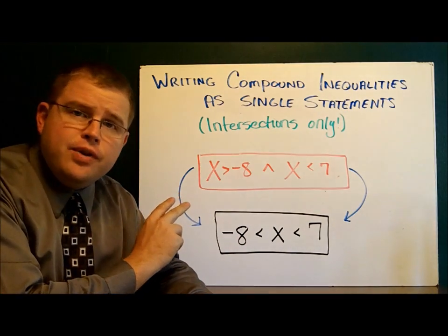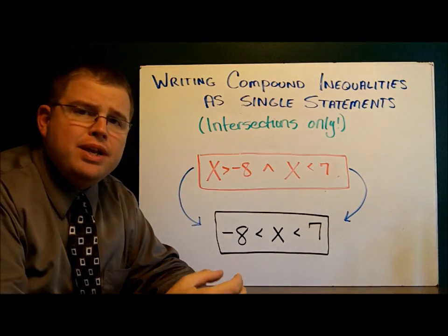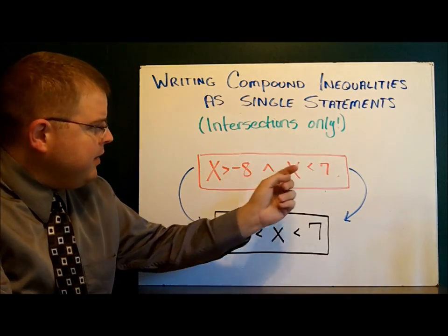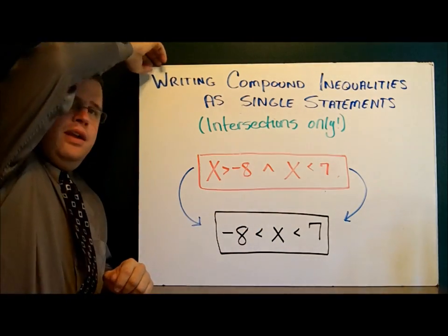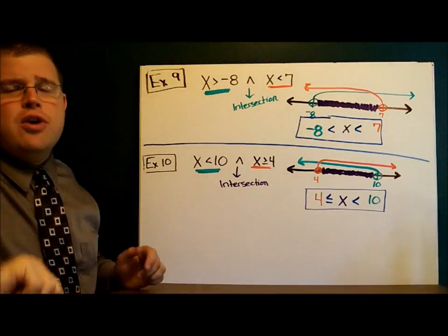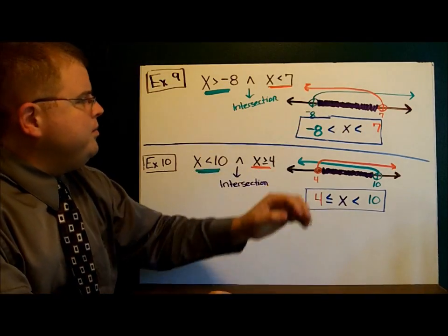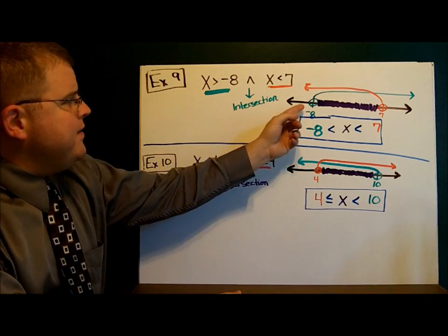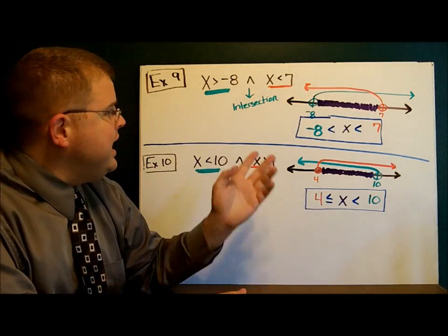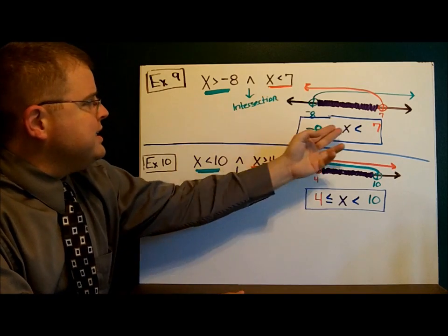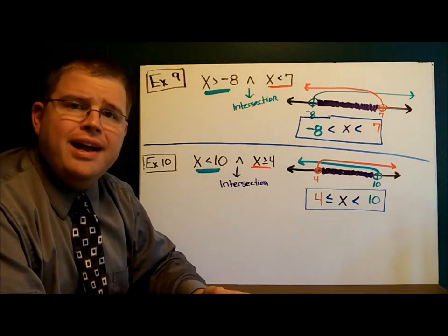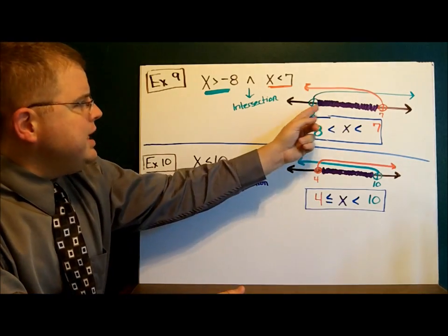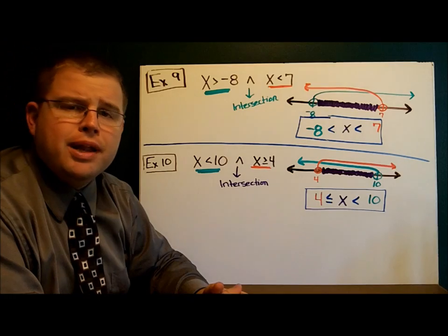Let's take a look at the first example. We have the compound inequality: x is greater than negative 8, intersected with x is less than 7. Let's begin by drawing that graph out. I have the inequality x is greater than negative 8 done in green, and x is less than 7 done in red. The intersection is the area they have in common — in between those two points, the purple area.